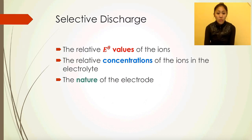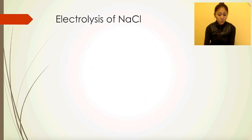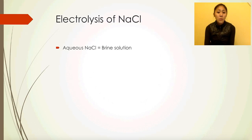Today we're going to look at selective discharge with respect to the relative concentrations of the ions in the electrolyte and the nature of the electrode. Remember, standard electrode potential values of the ions was the factor we investigated with the electrolysis of water. We're going to look at sodium chloride as an example. Aqueous sodium chloride can also be known as brine solution.